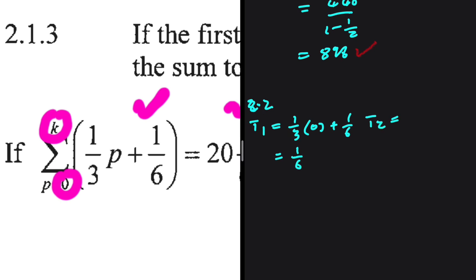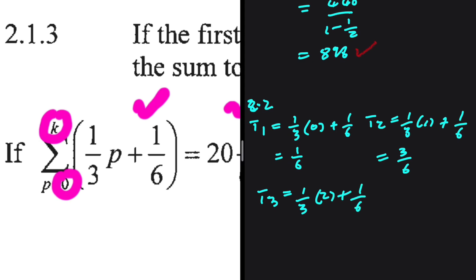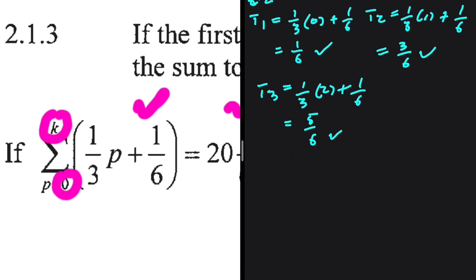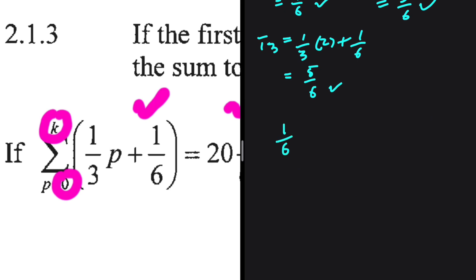T2 is (1/3)(1) plus 1/6, which is 3/6. T3 is (1/3)(2) plus 1/6, which is 5/6. Our series is 1/6 + 3/6 + 5/6. Checking: 5/6 minus 3/6 is 2/6, and 3/6 minus 1/6 is 2/6. We have a common difference, so this is an arithmetic series.